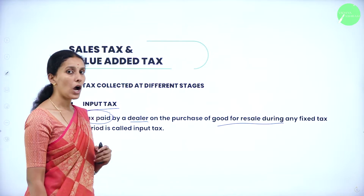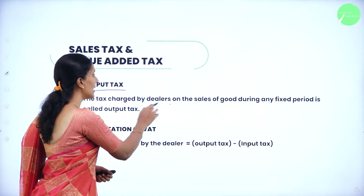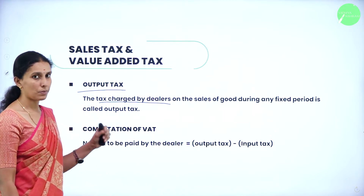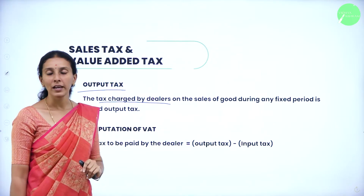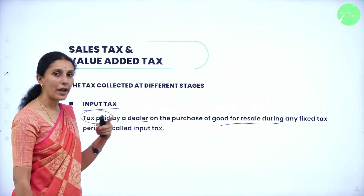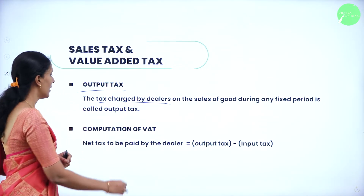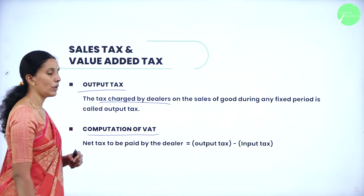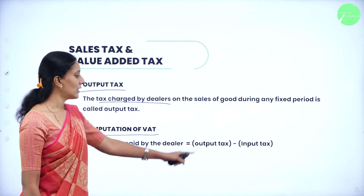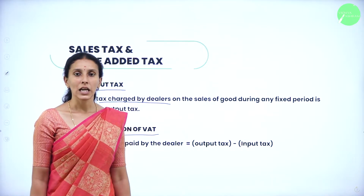Next we have the output tax. Output tax is the tax charged by the dealers on the sales of goods during any fixed tax period, and this charged price is given by the customers. So input tax is the tax paid by the dealer, and output tax is the tax charged by the dealer. The difference of these two helps us calculate the net VAT, which is given by output tax minus input tax.